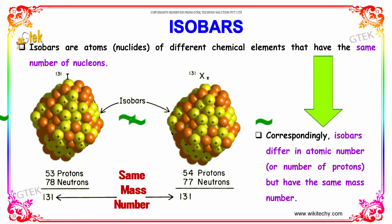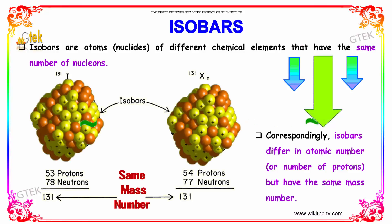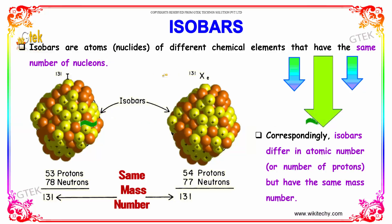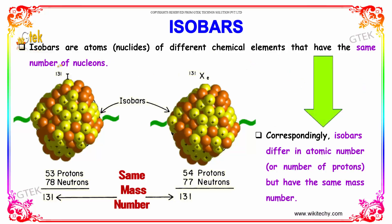Let's talk about isobars. What are isobars? Isobars are atoms of different chemical elements that have the same number of nucleons.